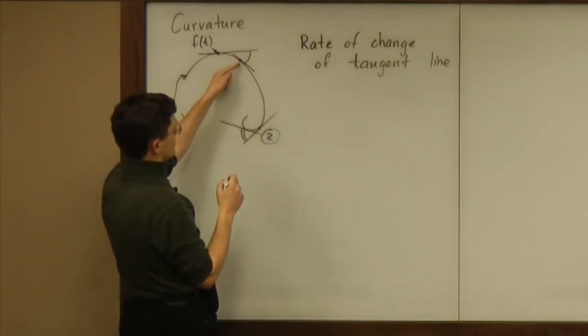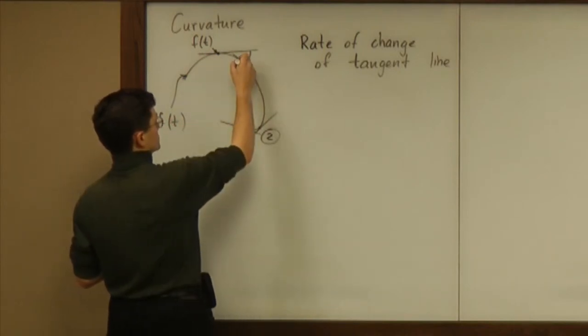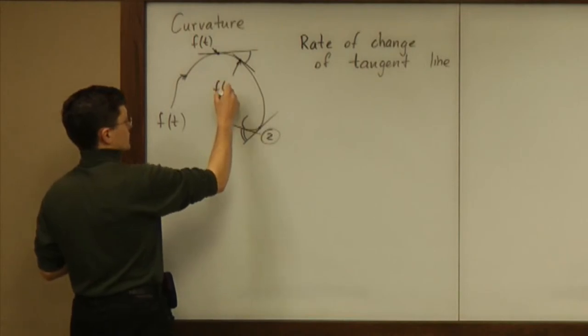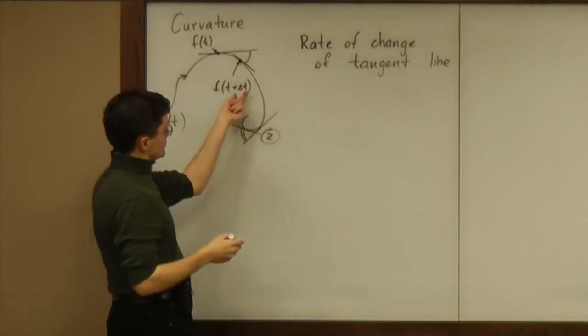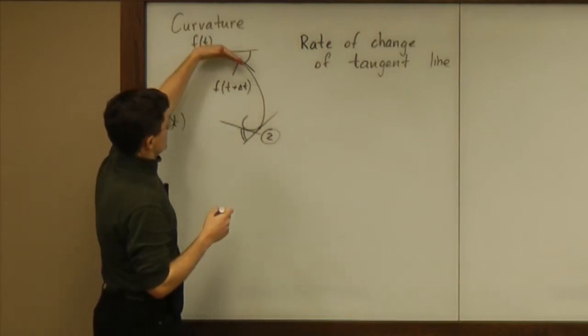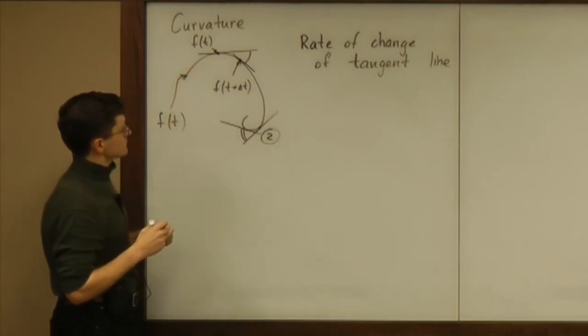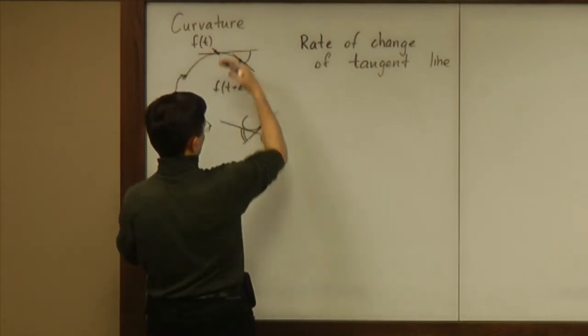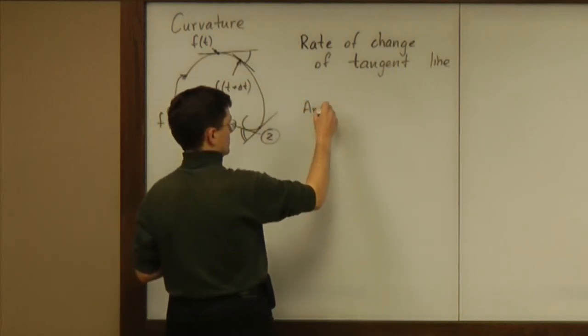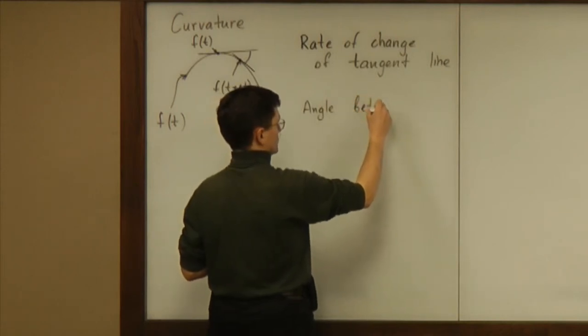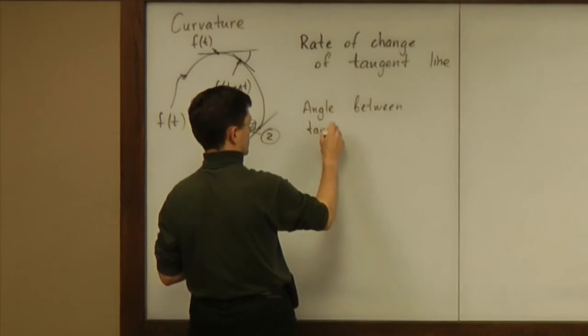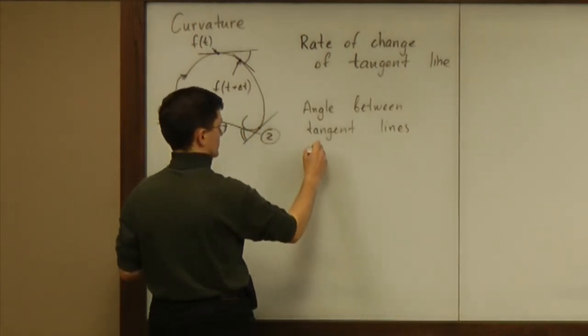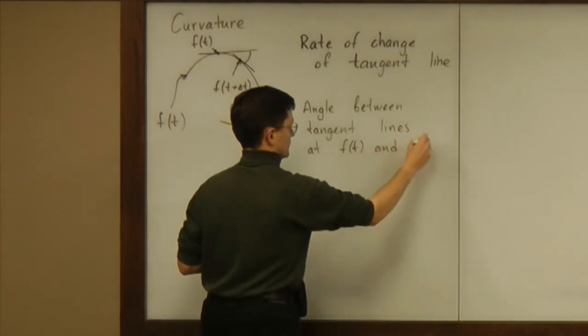And then, we suppose that we move the point further. So, how far should we move it? Well, we move it a lot. Well, a little, right? So, we move it to the position f of t plus some time delta t and we suppose delta t is small. Because we look at how tangent line changes in the neighborhood of that point. So, what we compare now is the directions basically of these tangent lines. So, we measure the angle between the tangent lines at f of t and f of t plus delta t.